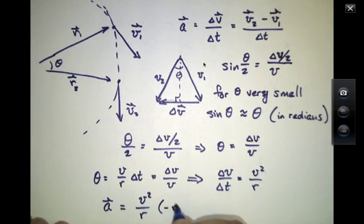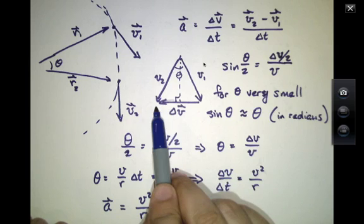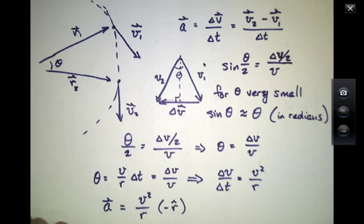And it's in the minus R hat direction. Why did I write that? Delta V, notice, points back toward the center of the circle. Therefore, an acceleration, which is always delta V over delta T, has to point back toward the center of the circle as well.